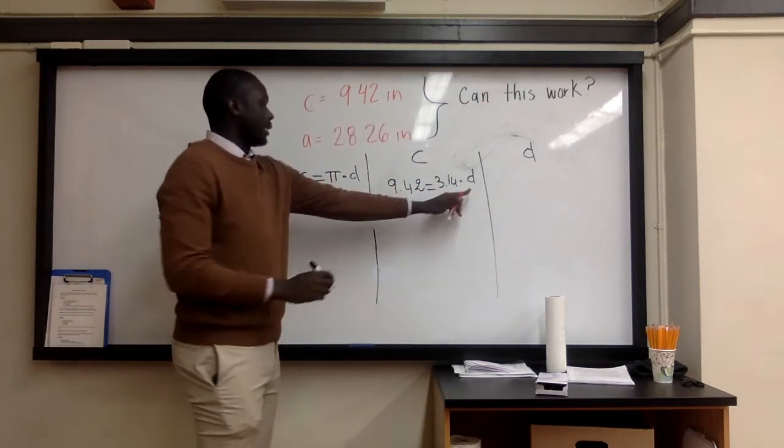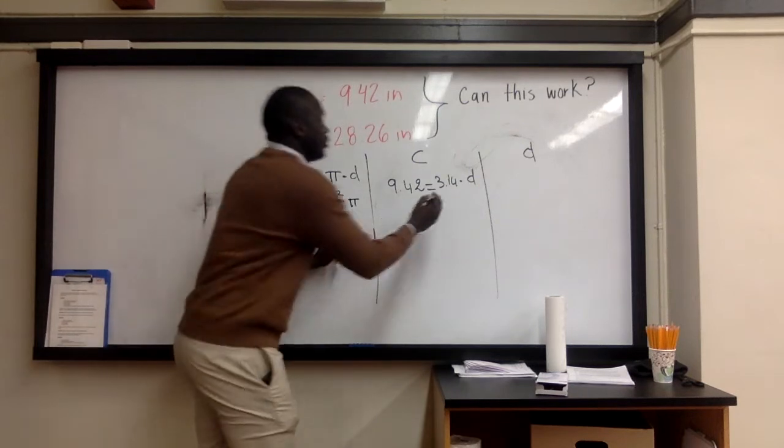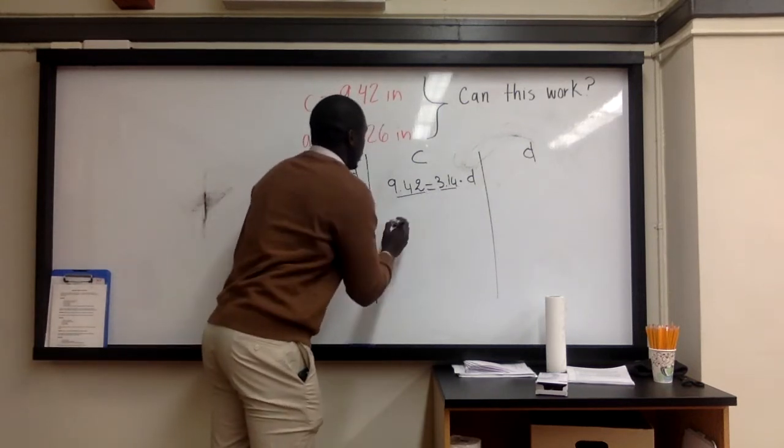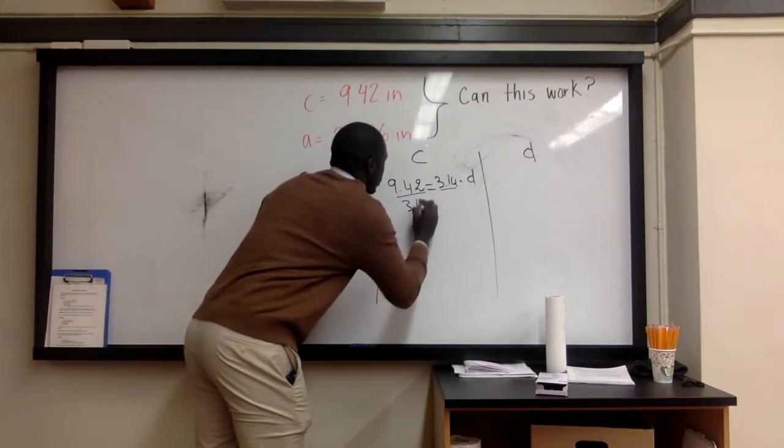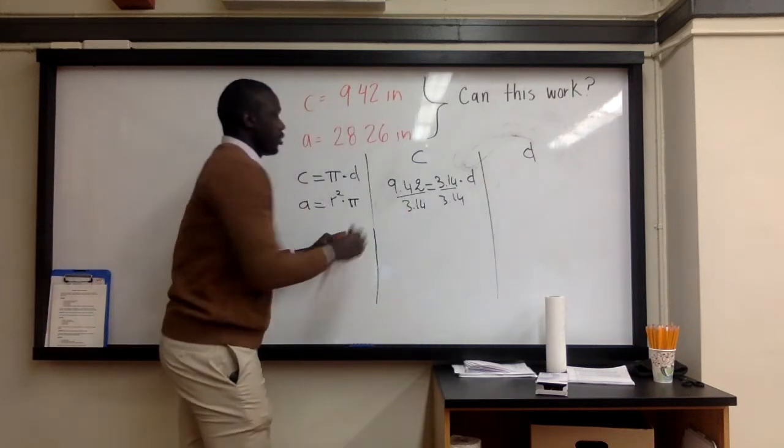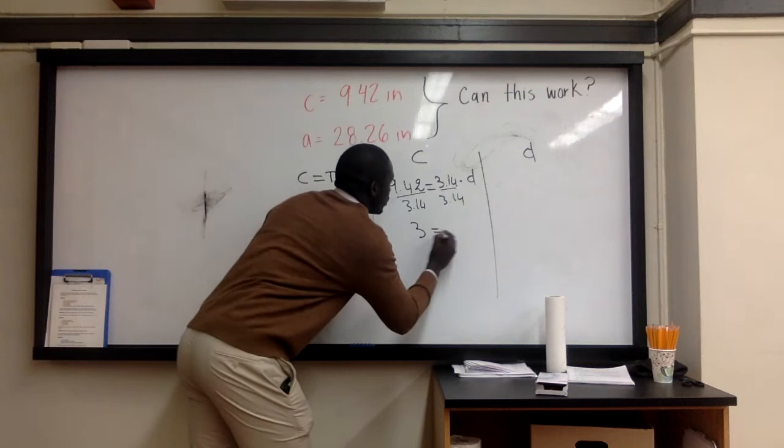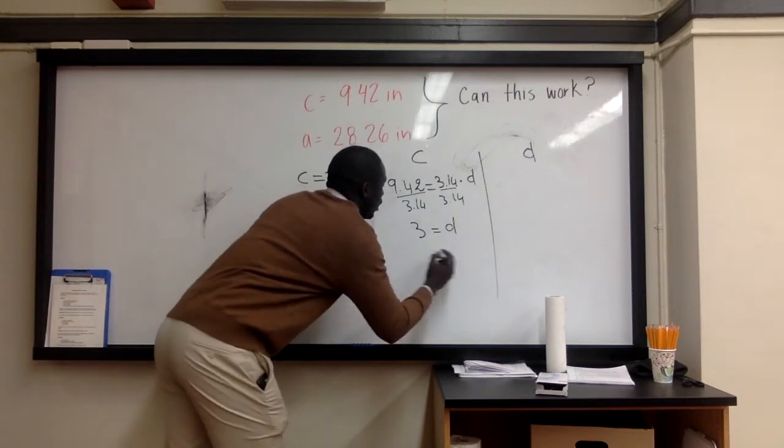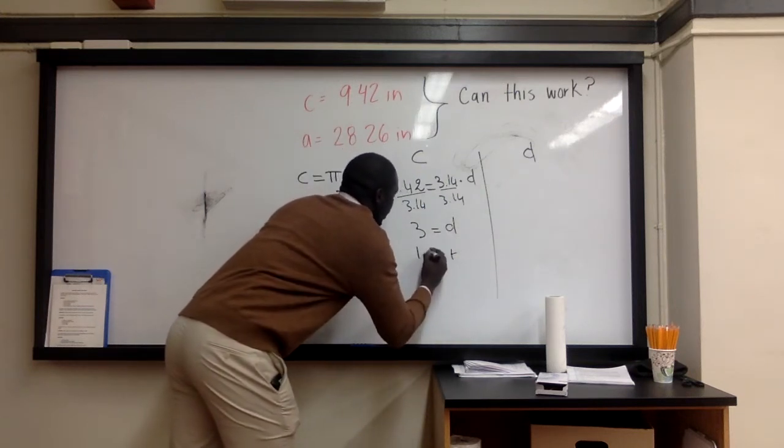Cool. Now, if I'm trying to get D by itself to know the value of D, I'll just divide by 3.14. So approximately that would be equal to D, which means R is equal to 1.5.